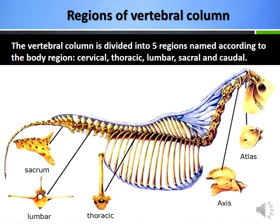The vertebral column is formed by a chain of median, unpaired and irregular bones called vertebrae. These vertebrae extend from the skull to the end of the tail. The vertebral column is subdivided into five regions named according to the region of the body. Thus, the vertebrae are designated as cervical, thoracic, lumbar, sacral and caudal or coccygeal.